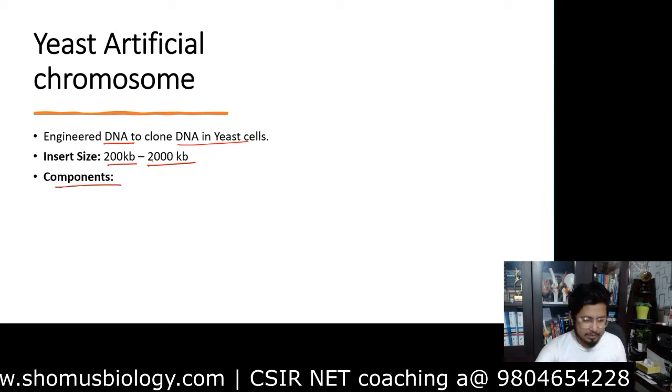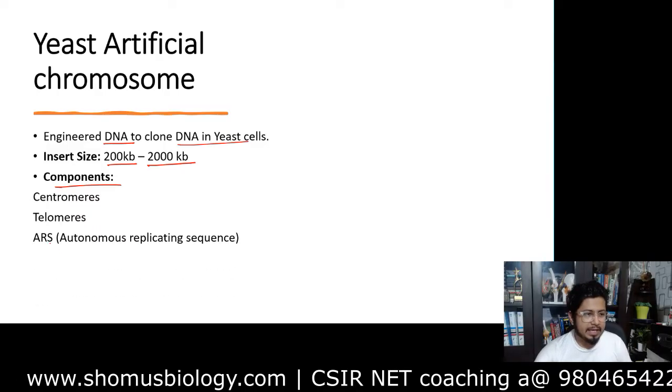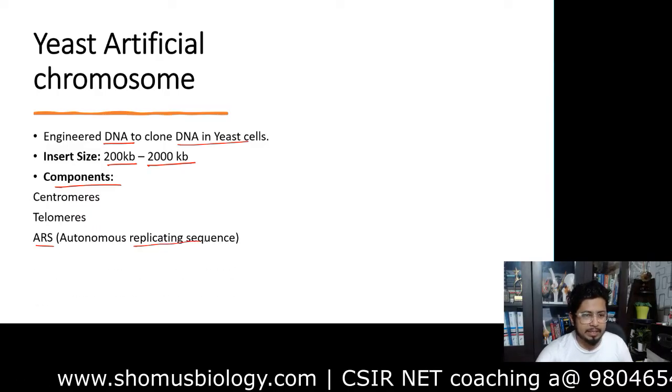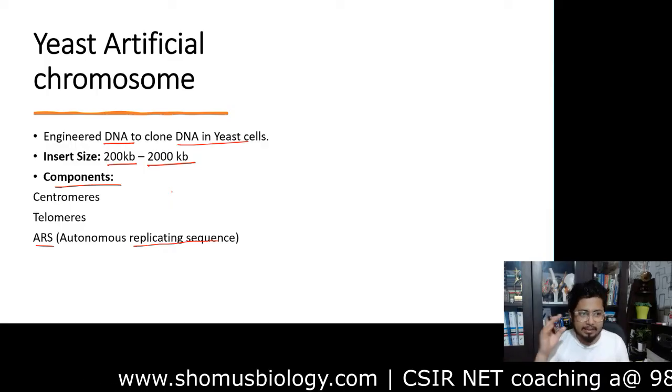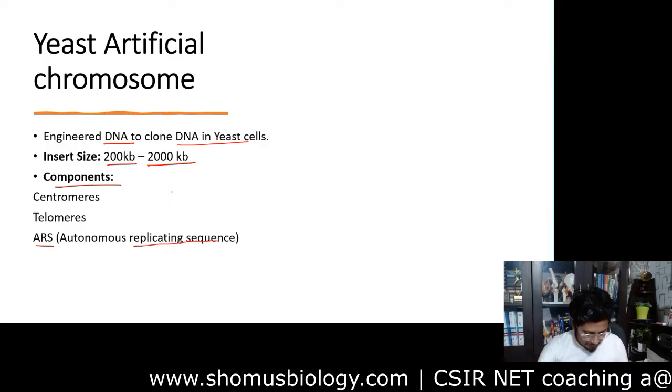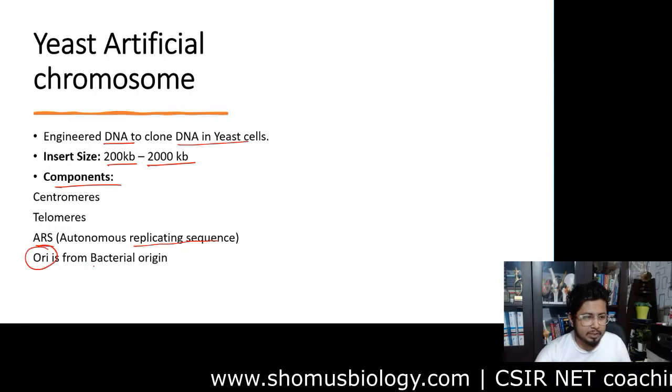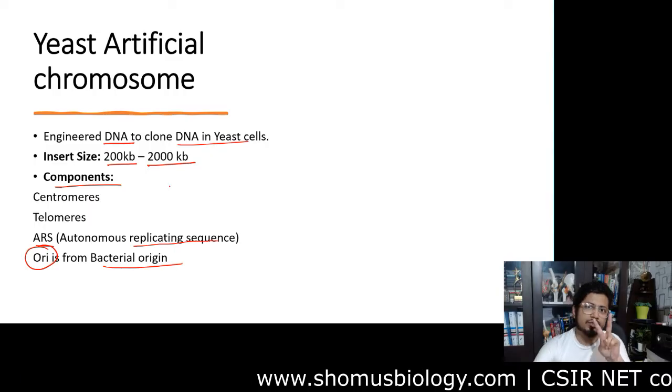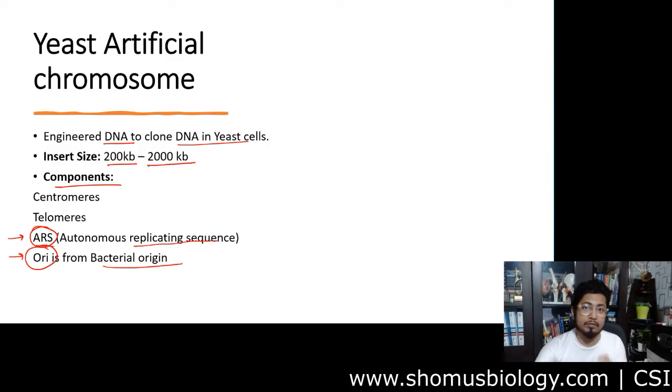What are the components of Yeast Artificial Chromosome? Centromere is present there, telomeres are present, and ARS - autonomous replicating sequence - are present there. Centromeres, telomeres, and autonomous replicating sequences, these three components are present. Apart from that, there is the origin of replication from bacterial origin also present. So there are two different replication origins present. One is this ARS, autonomous replication region. Another one is origin of replication from bacterial origin.